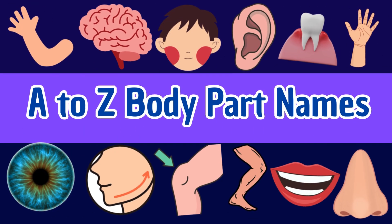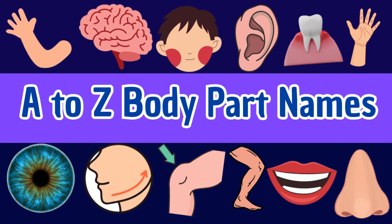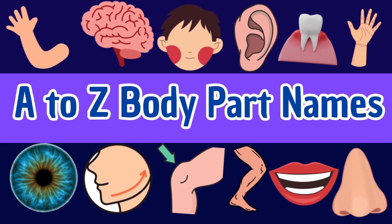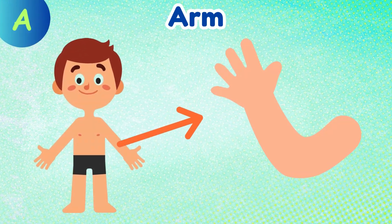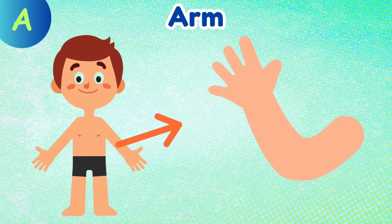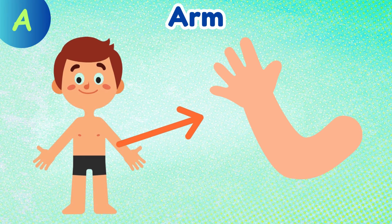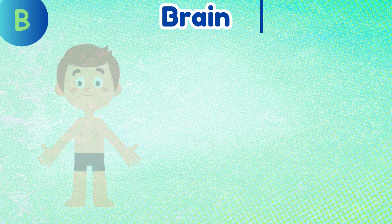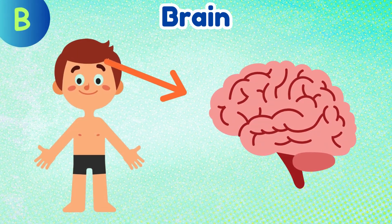A to Z body part names for kids. A: Arm. B: Brain.